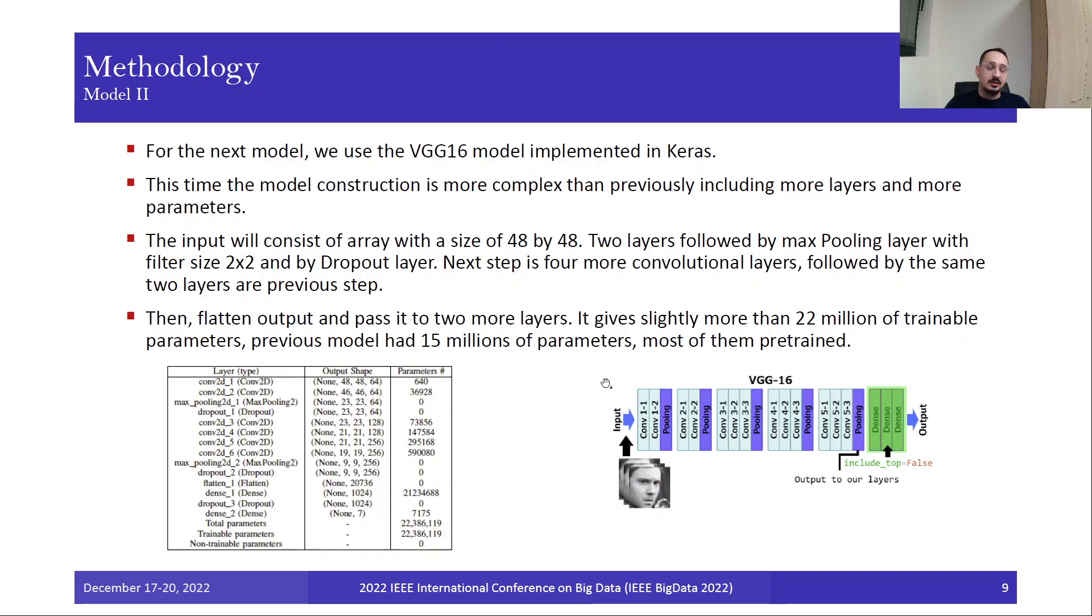Next, we have another model so we can evaluate both models and compare them. For the next model, we use the VGG16 model, which we implement in Keras. This time the model construction is more complex than the previous model, where we include more layers and parameters. The input consists of an area of size 48×48, we have two layers followed by a max pooling layer with filter size 2×2 and a dropout layer. Next we have four more convolutional layers with dropout, then four more convolutional layers, and we follow the same two layers as the previous step. Then we have flatten output and pass it to two more layers, giving us slightly more than 22 million trainable parameters, while the previous model had 50 million parameters, most of which were pre-trained.